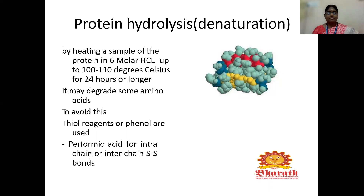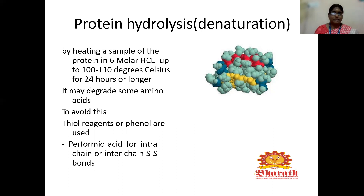After purification, we proceed to protein hydrolysis, which is called the protein denaturation process. Protein denaturation is done by heating the sample in 6 molar HCl at 100 to 110 degrees Celsius for 24 hours or longer. During this process, some amino acids may degrade. To avoid this degradation, thiol reagents or phenol are used. Performic acid is also used for intra-chain or inter-chain disulfide bonds.